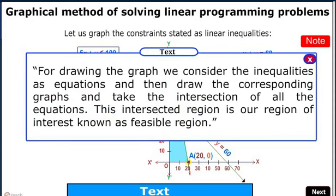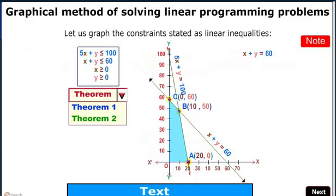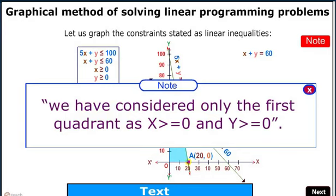For drawing the graph, we consider the inequalities as equations, draw the corresponding lines, and take the intersection of all the equations. The intersected region is our region of interest, known as the feasible region. Note that for the shaded region we consider only the first quadrant, as x ≥ 0 and y ≥ 0.